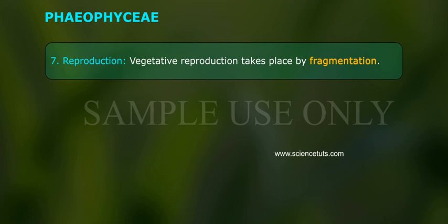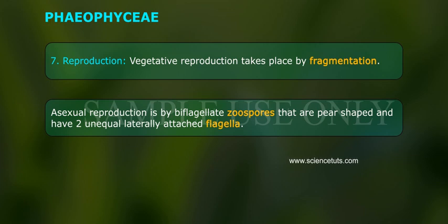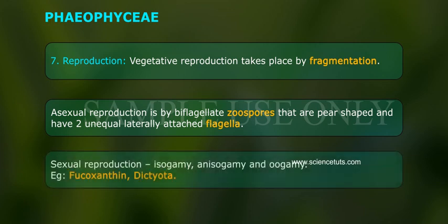Vegetative reproduction takes place by fragmentation. Asexual reproduction is by biflagellate zoospores that are pear-shaped and have two unequal laterally attached flagella. Sexual reproduction includes isogamy, anisogamy, and oogamy.